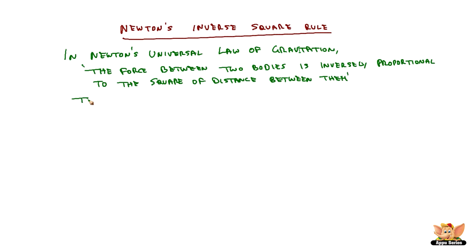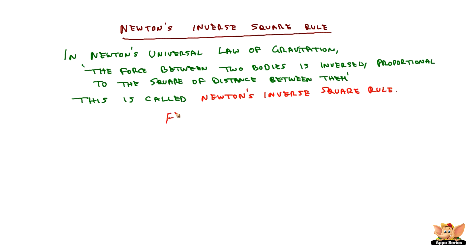In Newton's universal law of gravitation, the force between two bodies is inversely proportional to the square of the distance between them. This is called Newton's inverse square rule. Hence, F is proportional to 1 by d² or 1 by r² — some people say d, some say r — where r or d is the distance between the two objects. The assumption Newton made is that the bodies go in a circular orbit.